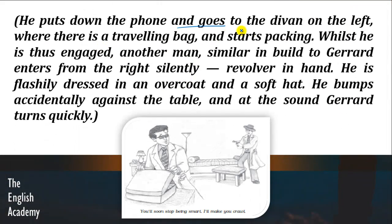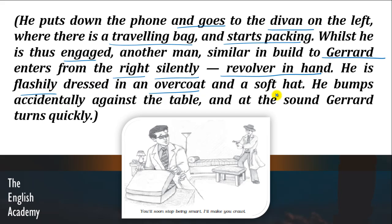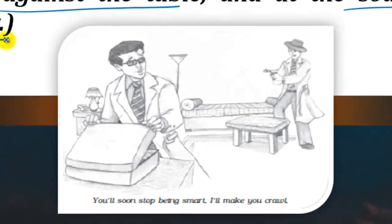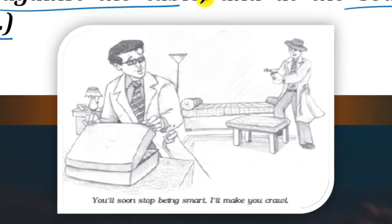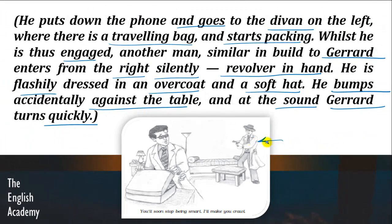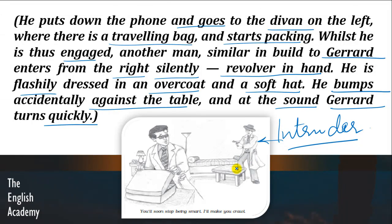He puts down the phone and goes to the divan on the left where there is a travelling bag and starts packing. While he is thus engaged, another man similar in build to Gerard enters from the right silently, revolver in hand. He is flashily dressed in an overcoat and a soft hat. He bumps accidentally against the table, and at the sound Gerard turns quickly. Yehi cheez hum is image mein bhi dekh sakte hai — intruder ka haath mein ek bandook hai aur usne bandook Gerard par aim ki hui hai.